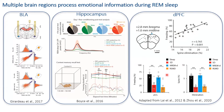In REM-deprived mice, there was impairment in behavioral performance and loss of network reorganization — but not when non-REM was disturbed. In summary, there is a link between the occurrence of REM sleep and the processing of emotional information in several regions, including the prefrontal cortex.